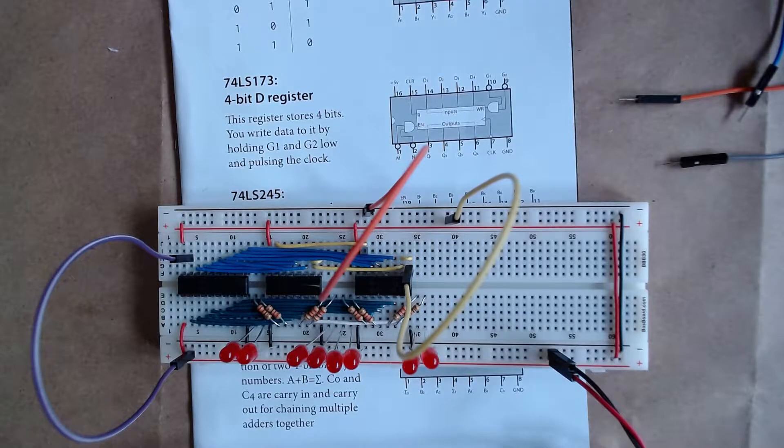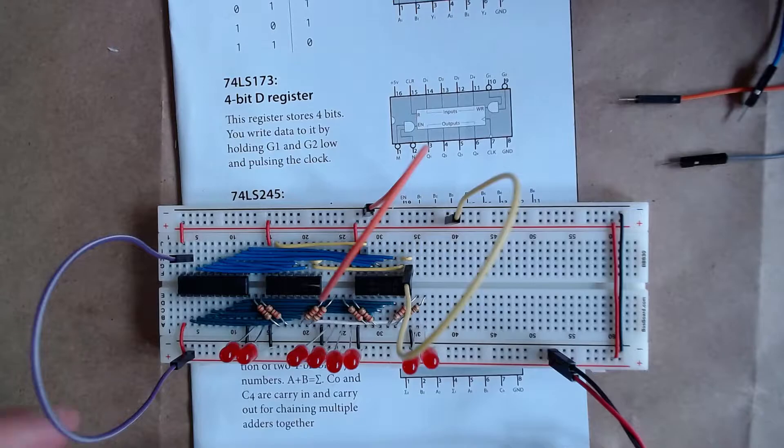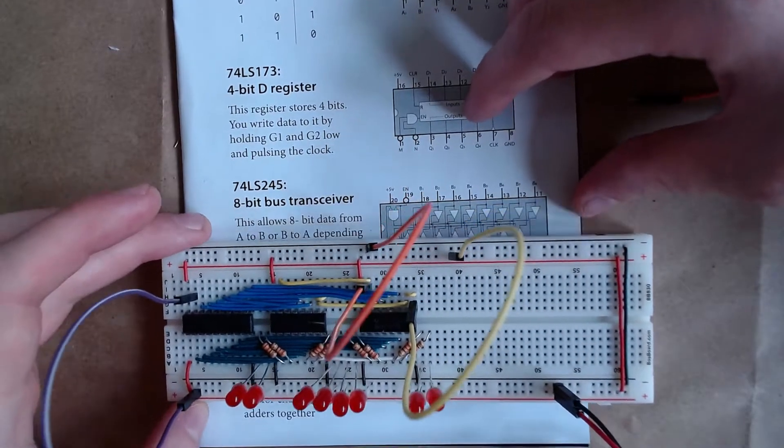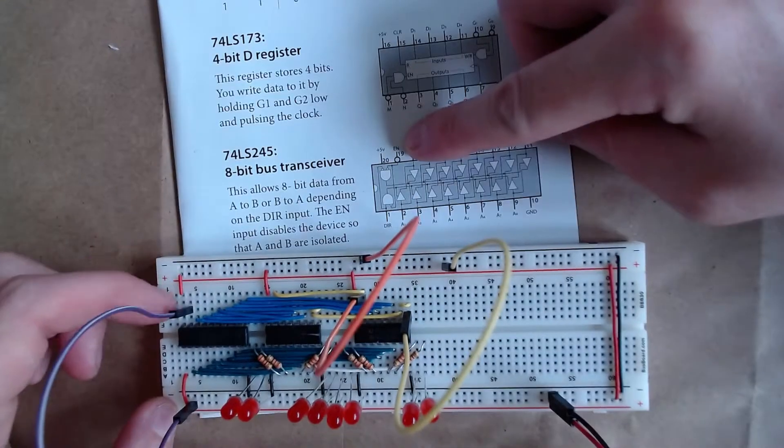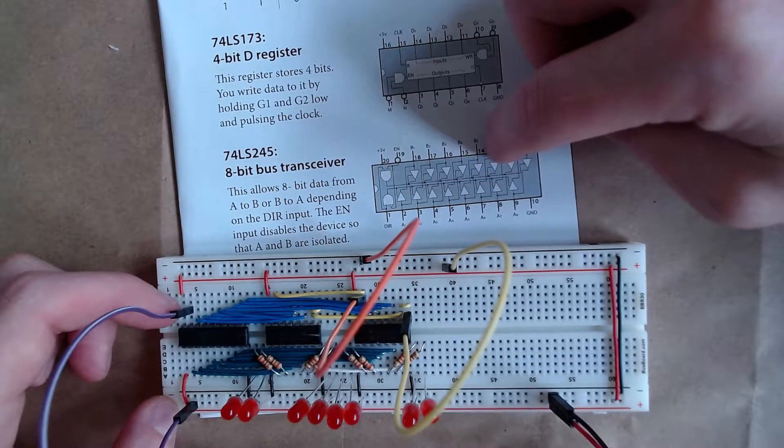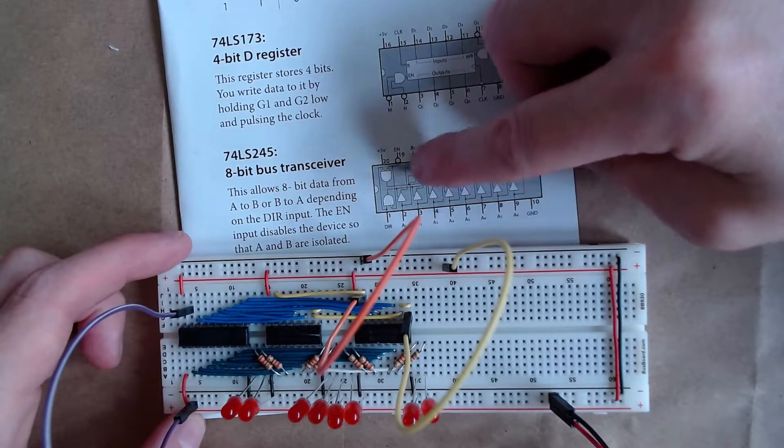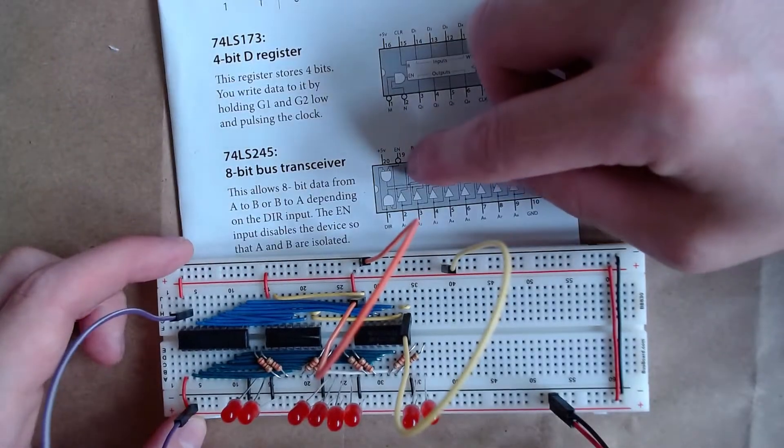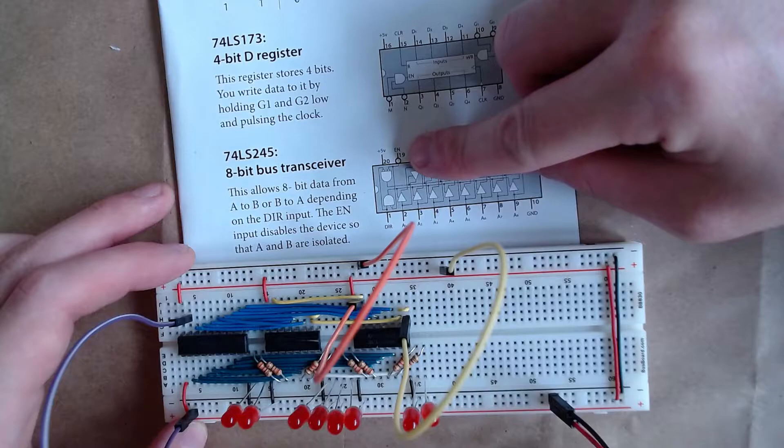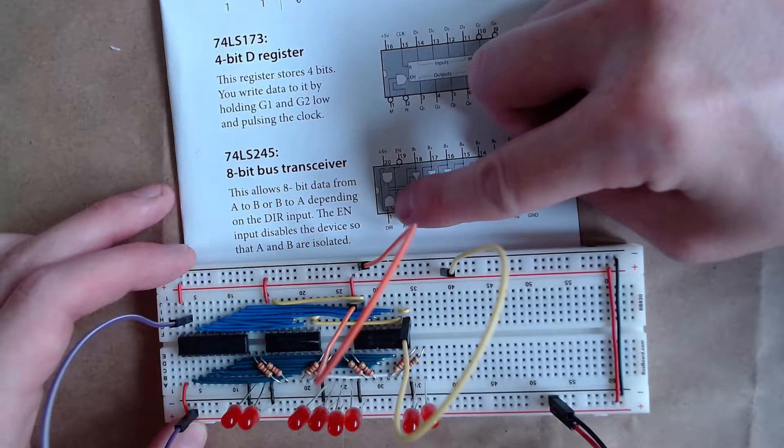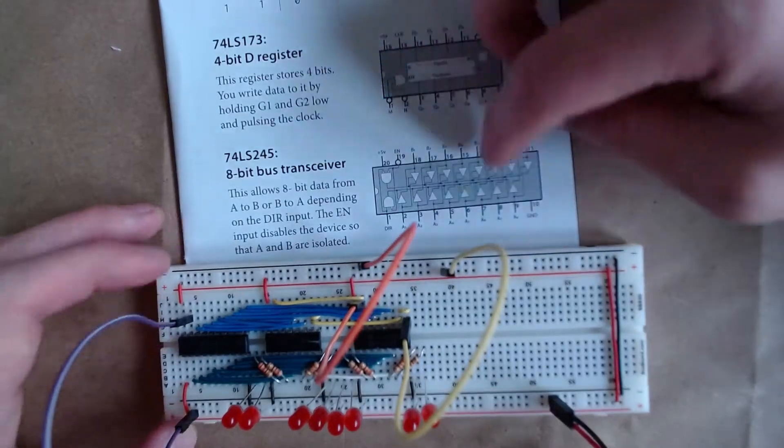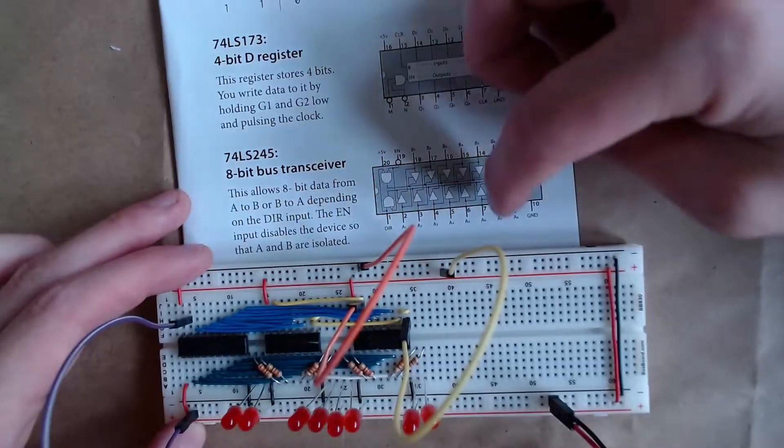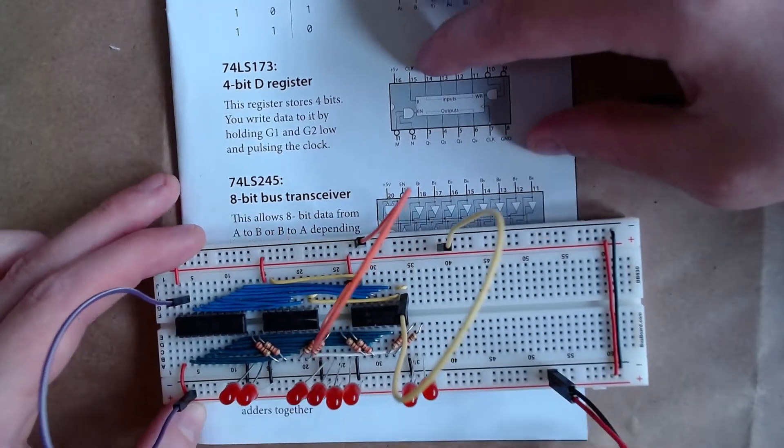I don't have a bus hooked up to it, which is kind of the point for now. But for the 245, I have the enable set to high so it's not outputting. Actually, if I set enable to high that'll get inverted to low. So it's not outputting and the direction is set to high, so it should be going from here to here, but enable is disabled so it's not outputting at all. The 245 is disabled.